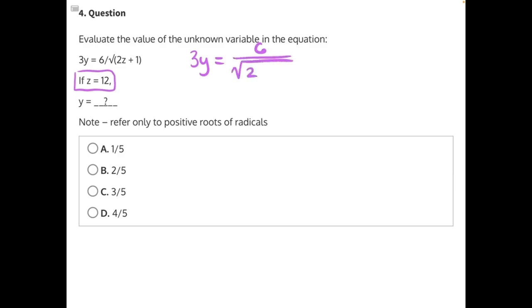Now the square root of 2, instead of z, we would put 2 times 12, because z and 12 are equivalent, plus 1. So before we're able to isolate y, we need to resolve everything underneath this radical. You can treat radicals as if they're their own set of parentheses for the sake of order of operations.